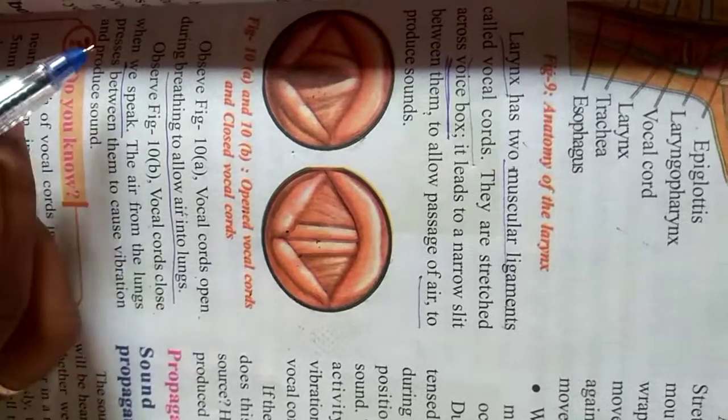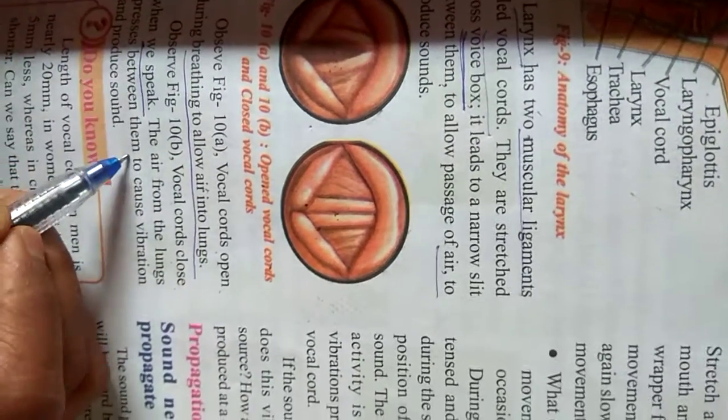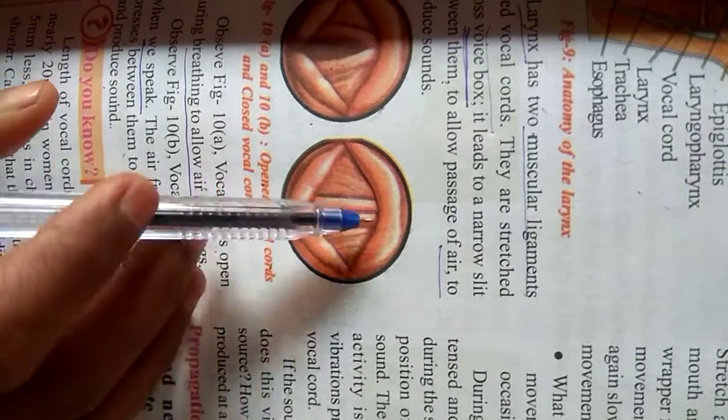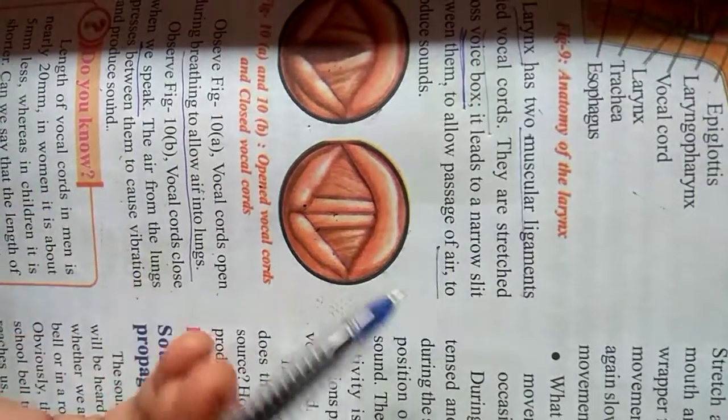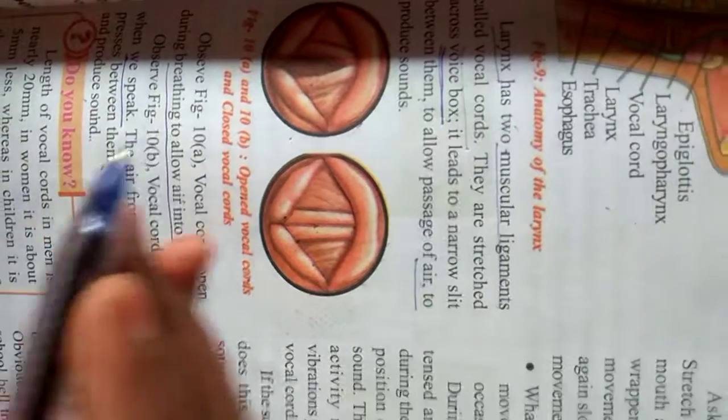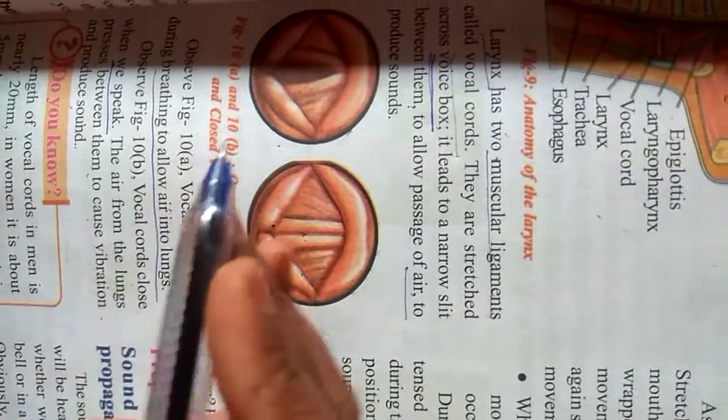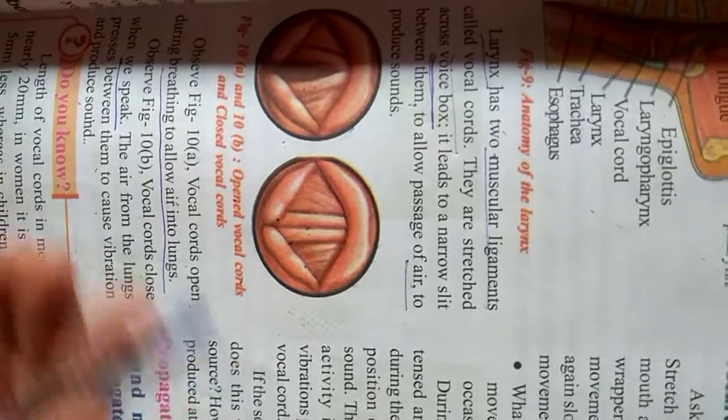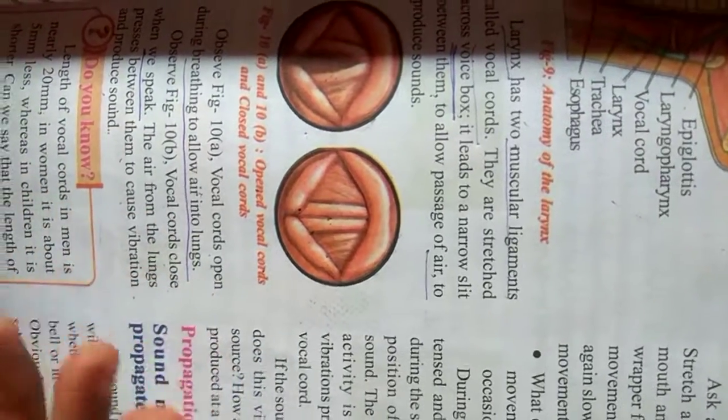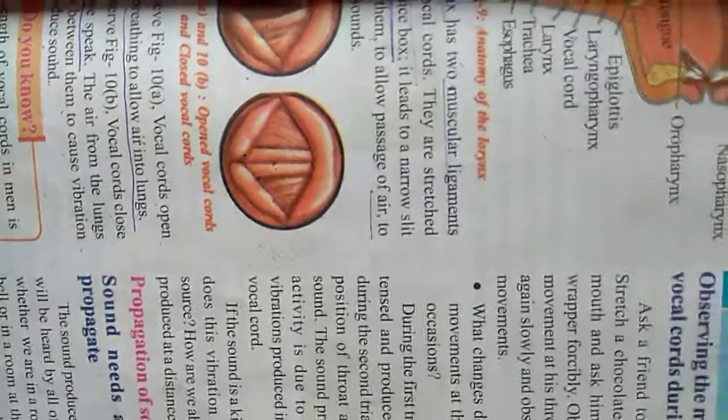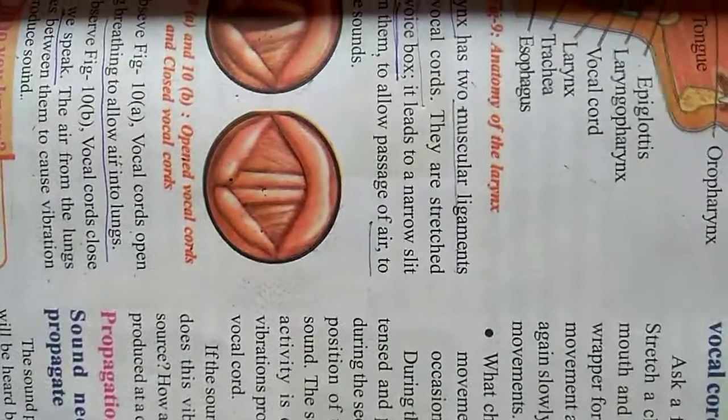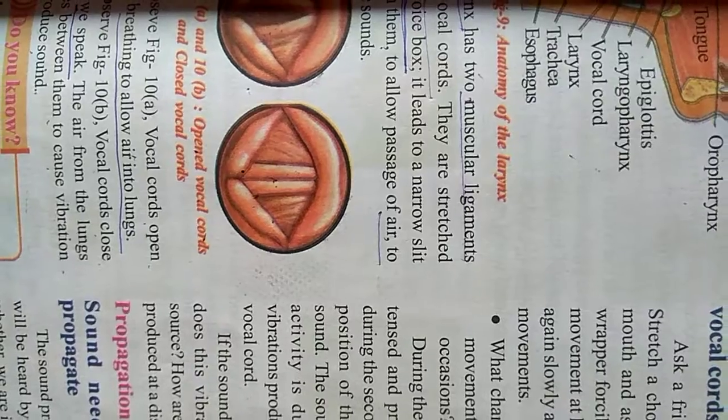The air from the lungs presses between them to cause vibration and produce sound. As these two are closed inside our body, air is already there. That air pushes these vocal cords and causes movement or vibrations. Due to vibrations, sound is produced. This is about how we speak and how sound is produced.